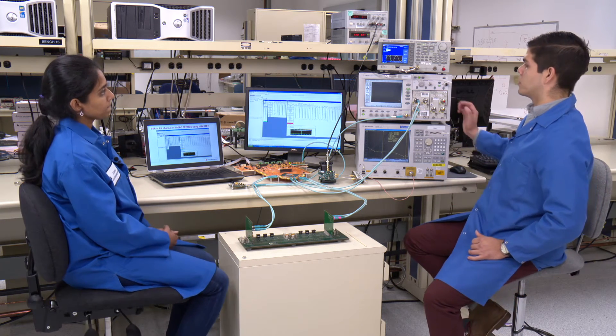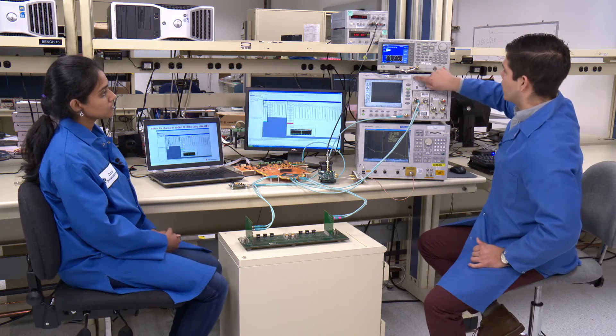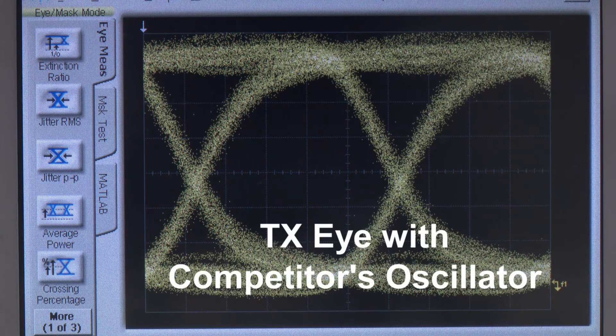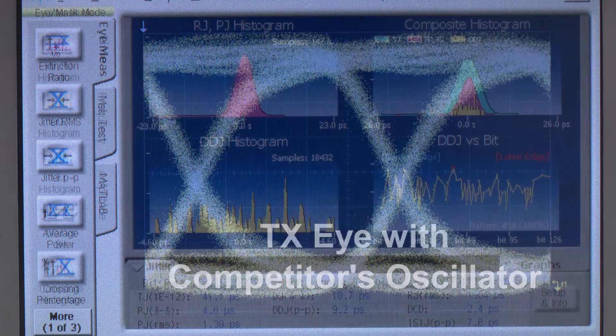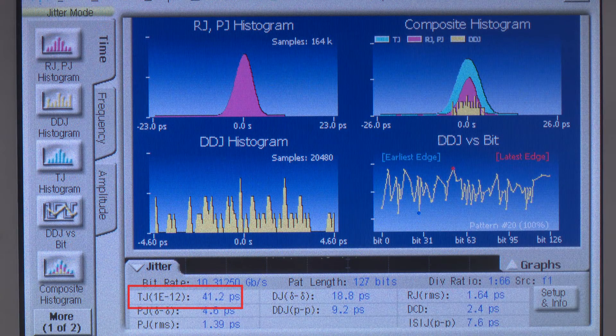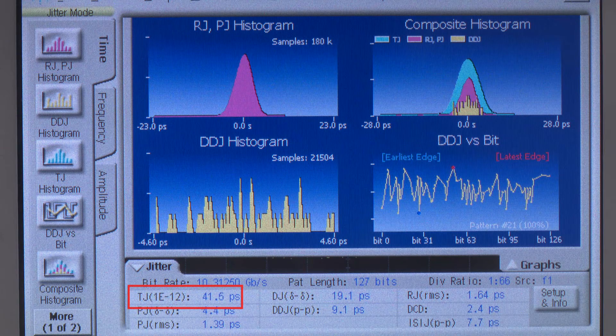Well, let's look at an experiment showing just that. If we look at the eye diagram of the SERDES link without the presence of noise on the power supply, we see the eye here. This translates to about 41.2 picoseconds of total jitter.